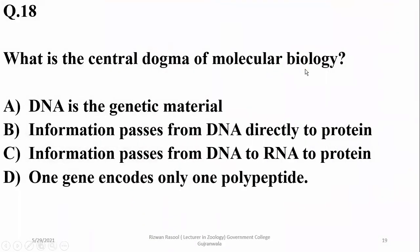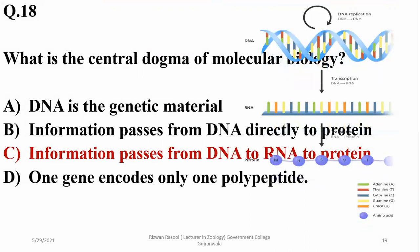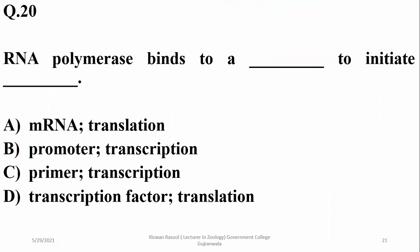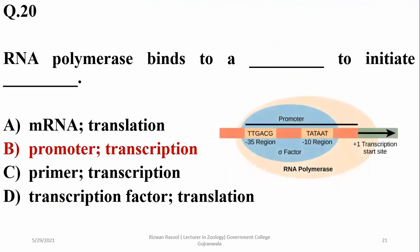Number 18: what is the central dogma of molecular biology? It is the formation of RNA from DNA and then formation of proteins from RNA — so Charlie. Eukaryotic transcription differs from prokaryotic in that eukaryotes have three RNA polymerases, whereas prokaryotes have only one. RNA polymerase binds to the promoter region to initiate transcription — so beta.